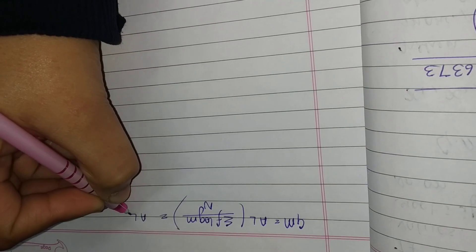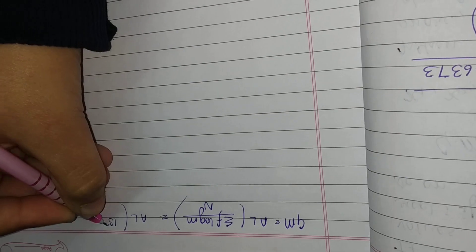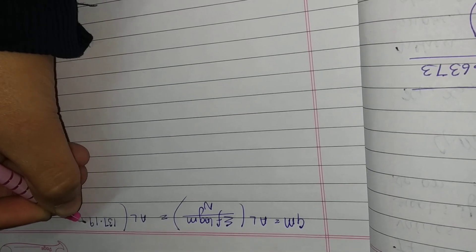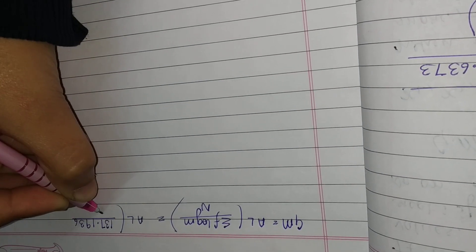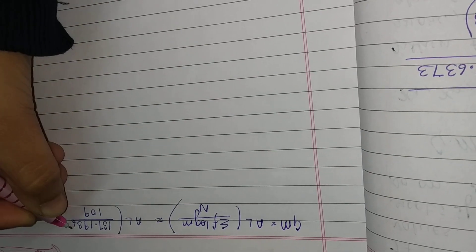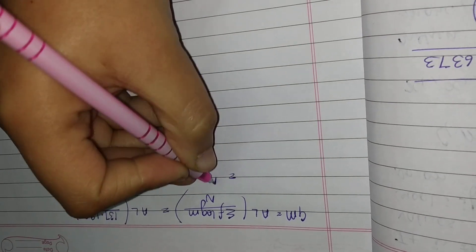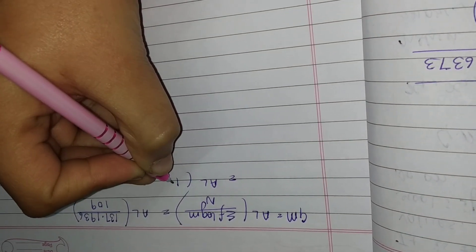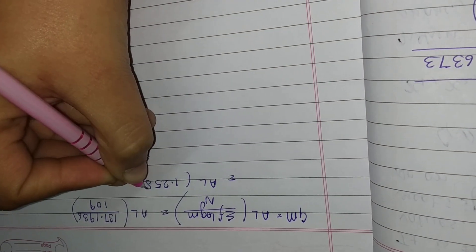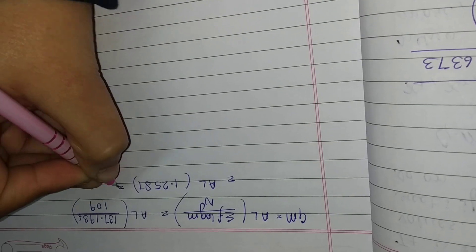That is antilog of 137.1936 divided by 109. When we divide this, we get antilog of 1.2587, and the antilog of this value is 18.14.